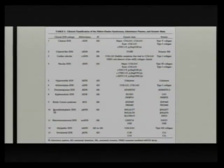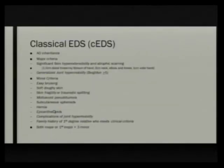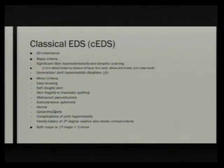This is the table with all 13 subtypes now described, the genes that are affected, the proteins they code for, and their inheritance pattern. Classic type is autosomal dominant. Major criteria include skin hyperextensibility — very specific about how far it has to extend at certain locations — and generalized joint hypermobility as defined by the Beighton criteria. There is also a list of minor criteria including easy bruising, soft doughy skin, dramatic skin splitting, molluscoid pseudotumors, subcutaneous spheroids, epicanthal folds, or complications of joint hypermobility.